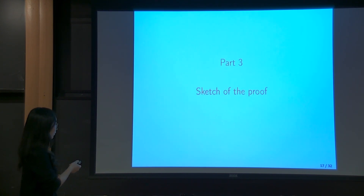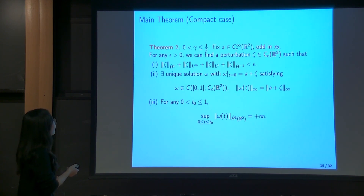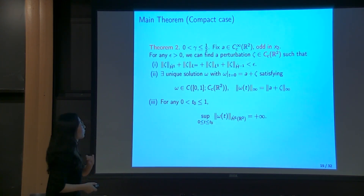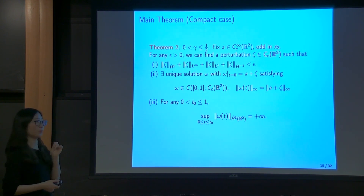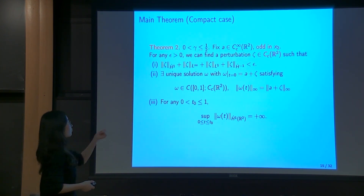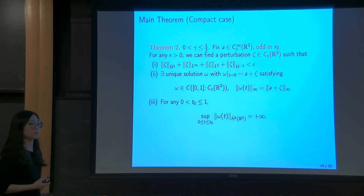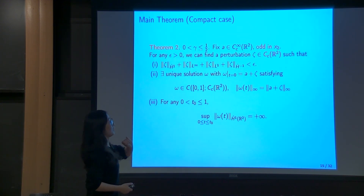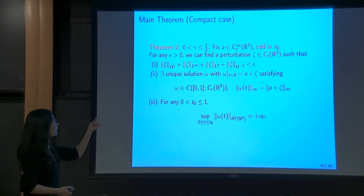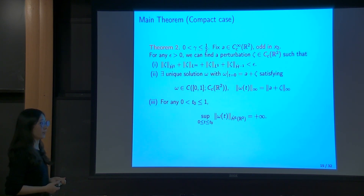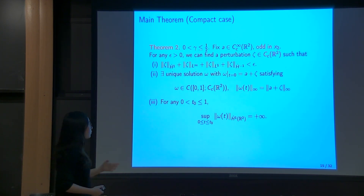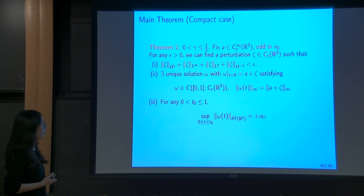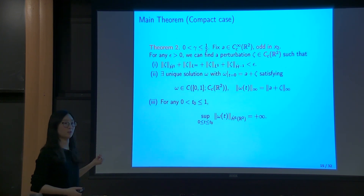To make the perturbation even compactly supported, we need an additional assumption on the given initial data, which comes from some technicality of our scheme. Specifically, the initial data must be odd in at least one of the variables — here for convenience we choose x₂. With this assumption we can always find a compactly supported perturbation satisfying a similar condition.